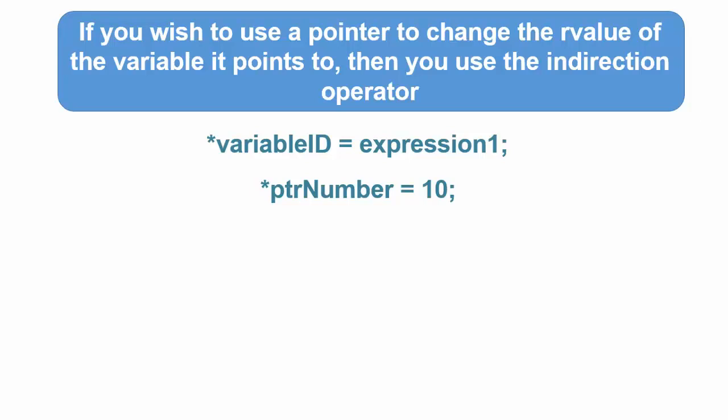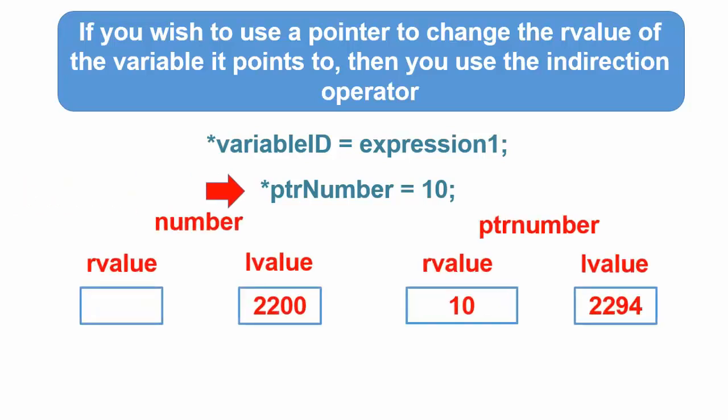This statement says get the r value of the variable pointer, go to that memory address, and copy the value 10 into integer bytes of memory at that address. Now the variable number has a value 10.